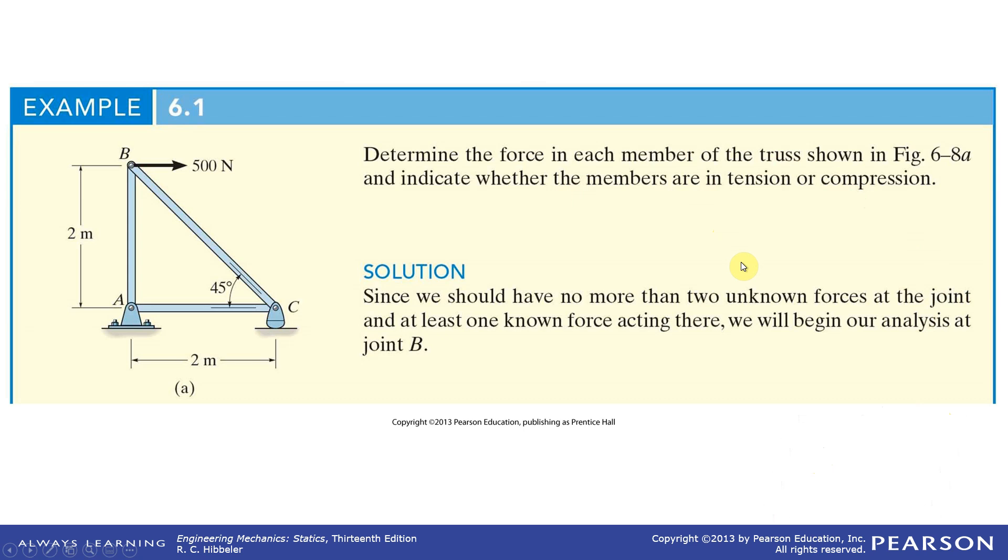And the first thing we need to do is draw a free body diagram but notice a couple things. Pin joint here, pin joint here, pin joint, but there's a roller joint here. Or rocker, it models the same thing as a roller. So at the A joint there's going to be X and Y directions of force. At the C joint, only the Y direction.